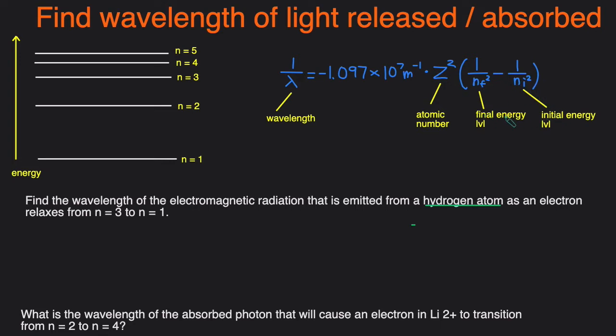Now let's take a look at an example for how we can solve for the wavelength. In the first example we have to find the wavelength of the electromagnetic radiation, which just means light, that's emitted from a hydrogen atom as an electron goes from 3 to 1. So it's dropping from higher to lower which means the energy is going to be released.